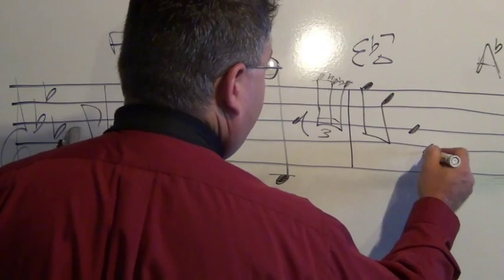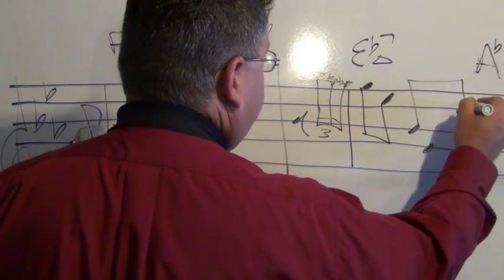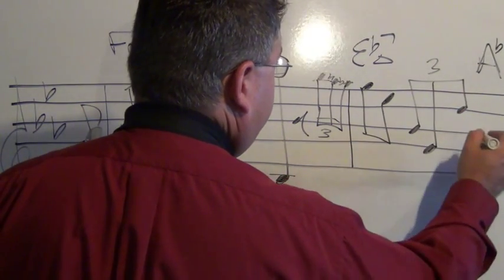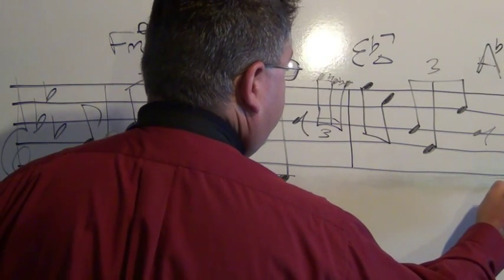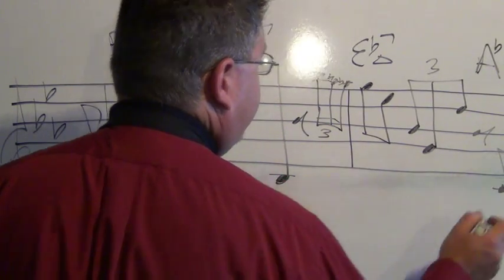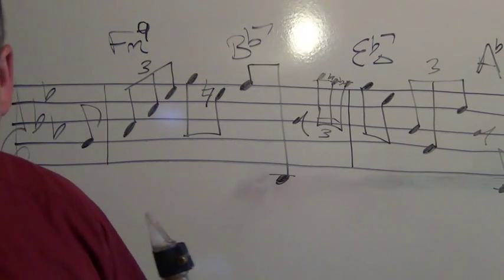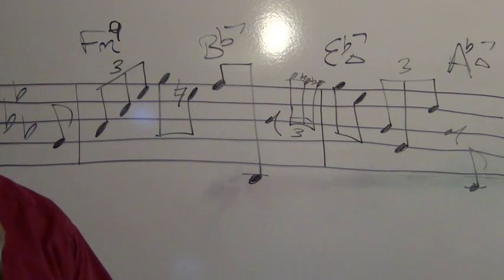And this is which is triplets, and then which is your low C, which belongs in the A-flat chord. So, we have, oh, wait, my C's disappeared. Watch this. Hello, C. There you are. So, here's what we have.